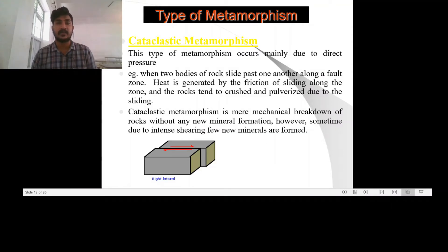The dominant factor in this cataclastic type of metamorphism means the pressure and which is the pressure, the nature of pressure here is a directed one.